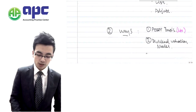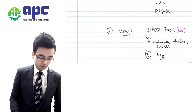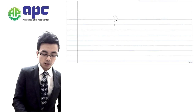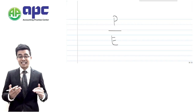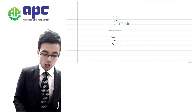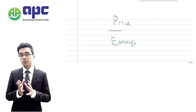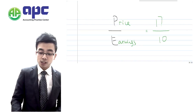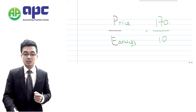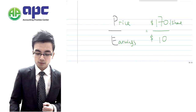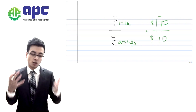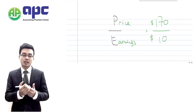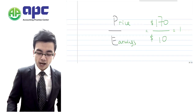The third way to value a business is the P/E Ratio method. P/E stands for Price divided by Earnings, where earnings means the profit after tax of the company. For example, if the earnings are ten dollars but the price of the company is 170 dollars per share, then the P/E ratio is 170 divided by 10, which equals 17.